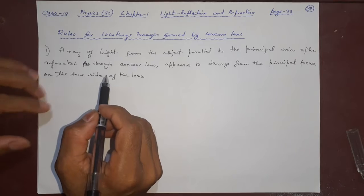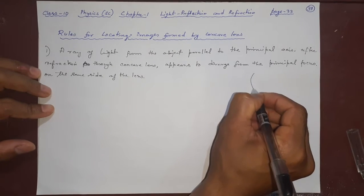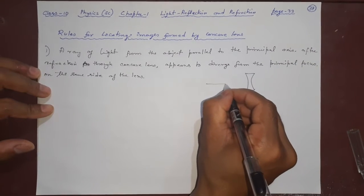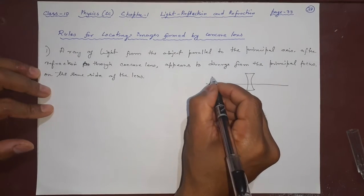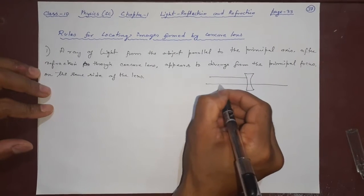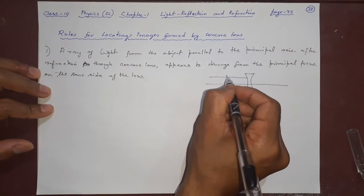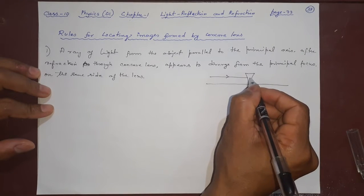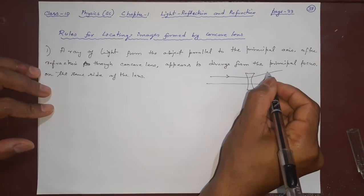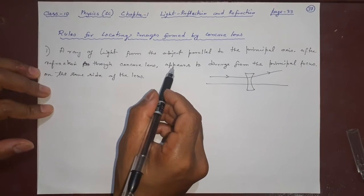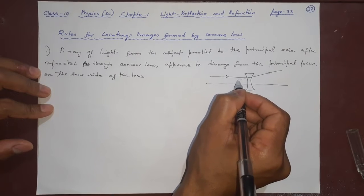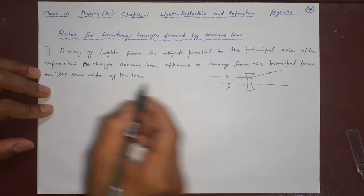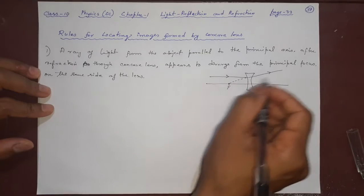The first rule is: if a ray of light passes parallel to the principal axis — suppose this is your concave lens and this is your principal axis — the ray of light coming parallel to the principal axis will pass through the lens, and it will appear as if it is coming out from the principal focus, on the same side, the left side of the lens. It diverges, but it appears to come from the focus.